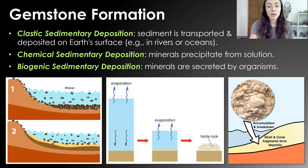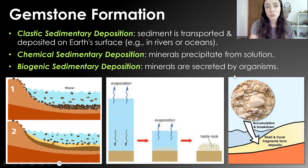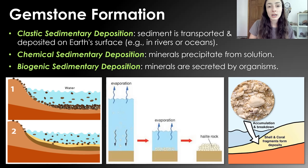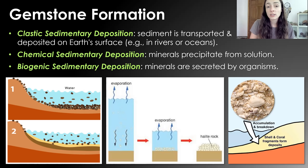The last type of sedimentary deposit is biogenic sedimentary deposition — basically minerals secreted by organisms. Shells and skeletons of organisms are formed by the biological production of minerals like calcium carbonate, calcium phosphate, and things like that.